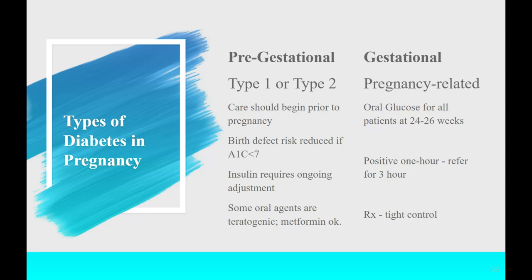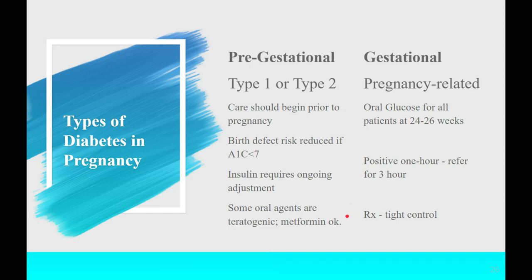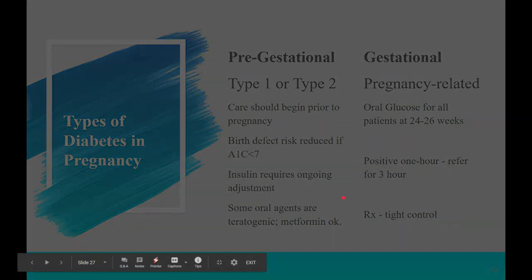For the three-hour test, the solution she has to drink is even more unpleasant and she must come fasting first thing in the morning. They take a fasting value, then after she drinks they collect one-hour, two-hour, and three-hour specimens. Based on those findings, they can diagnose gestational diabetes. The key to all good outcomes in diabetic pregnancy is tight control.